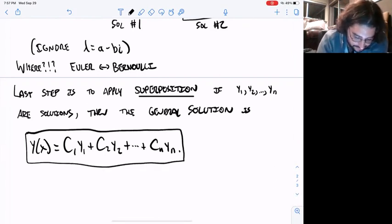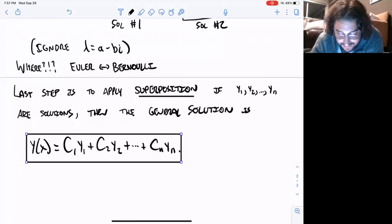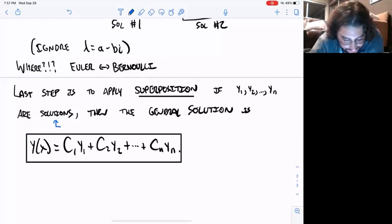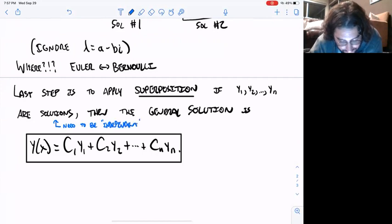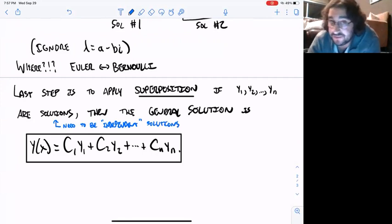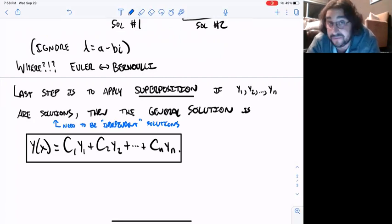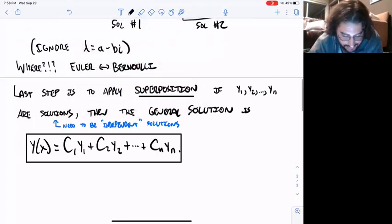There's a little asterisk here that technically these need to be independent solutions, but we haven't defined that term yet. First, we're going to see just how to find the solutions, and then some ideas from linear algebra—specifically determinants—will let us figure out whether or not they're independent. So for the moment, we're going to kind of sweep that under the rug, but we'll backfill that when we do linear algebra.